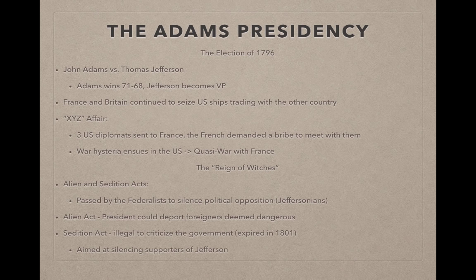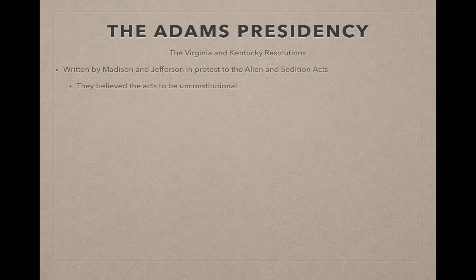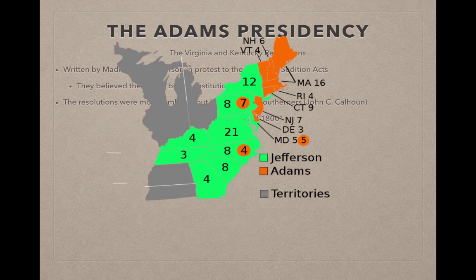In response, Jefferson and Madison authored the Virginia and Kentucky Resolutions, protesting the Alien and Sedition Acts as unconstitutional. They were more symbolic than anything else, but were later used by Southerners like John C. Calhoun in the 1820s and 1830s.